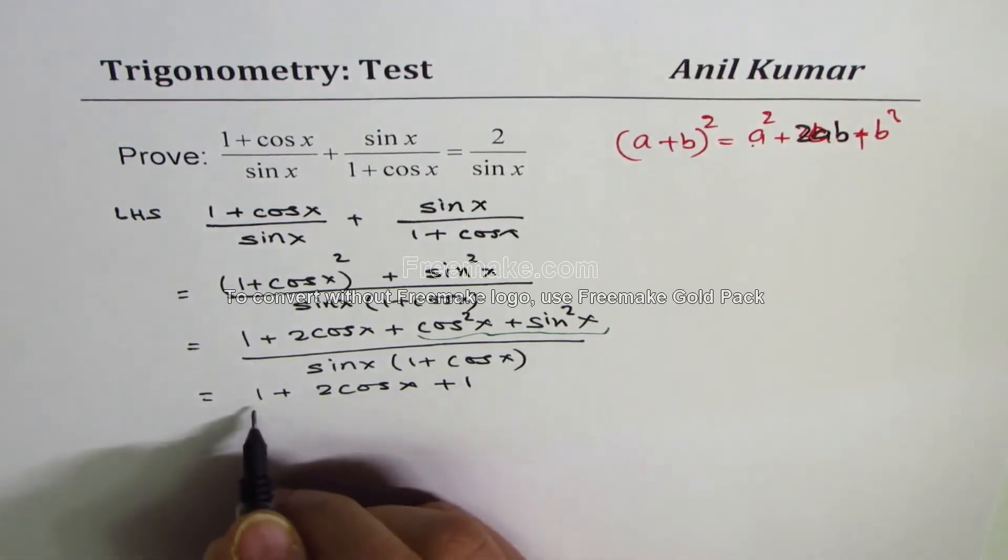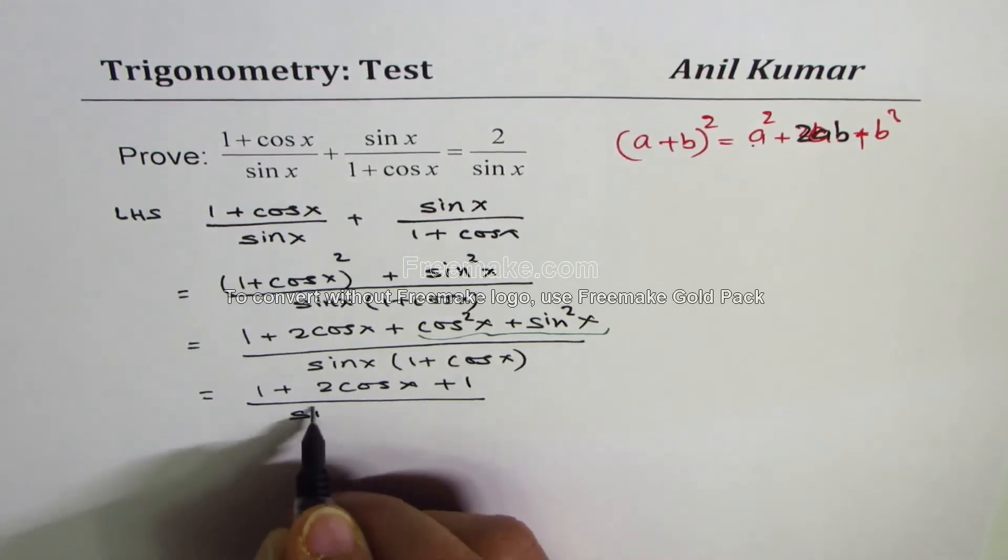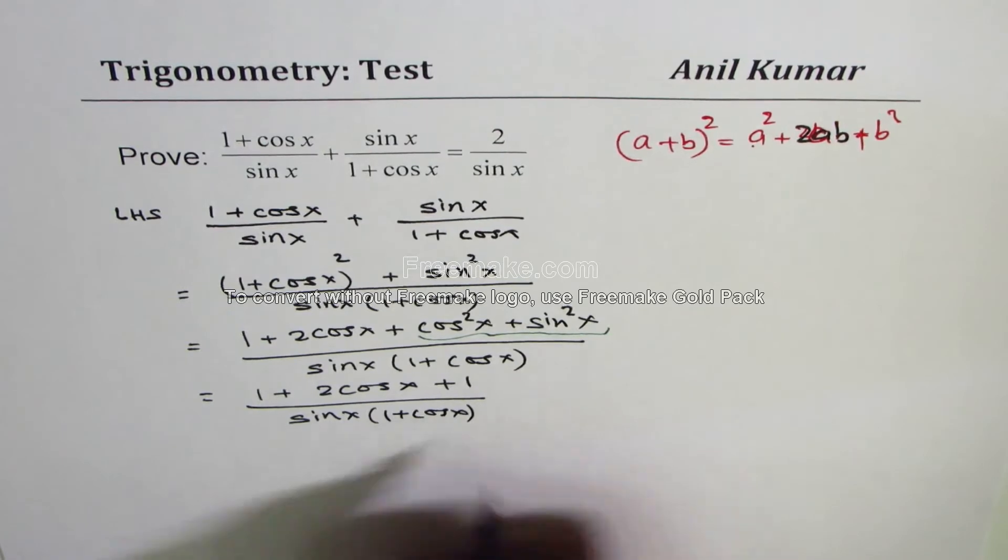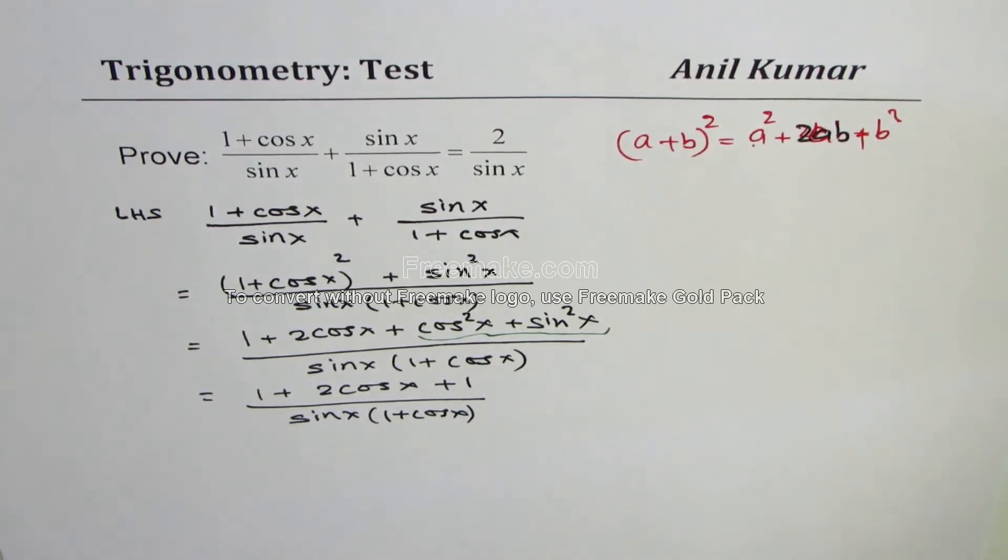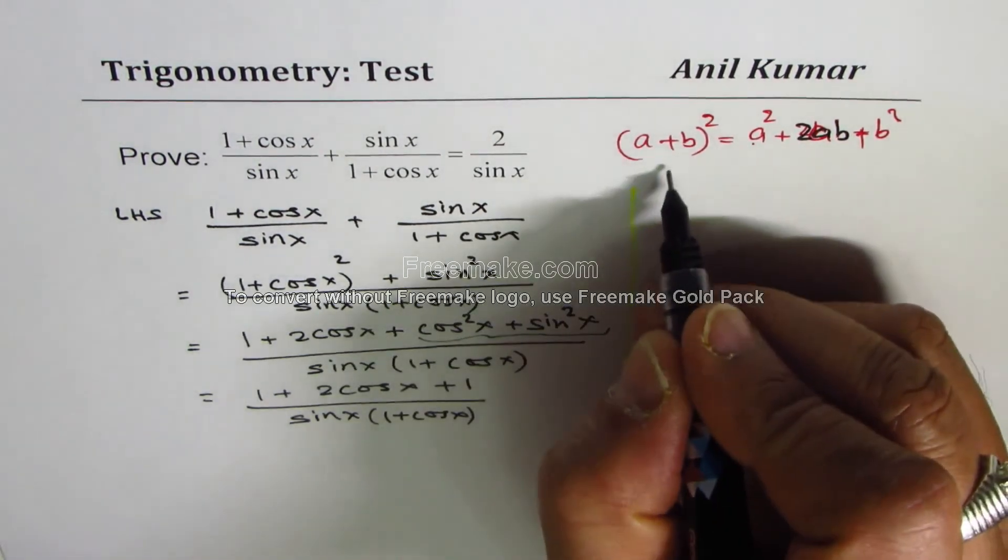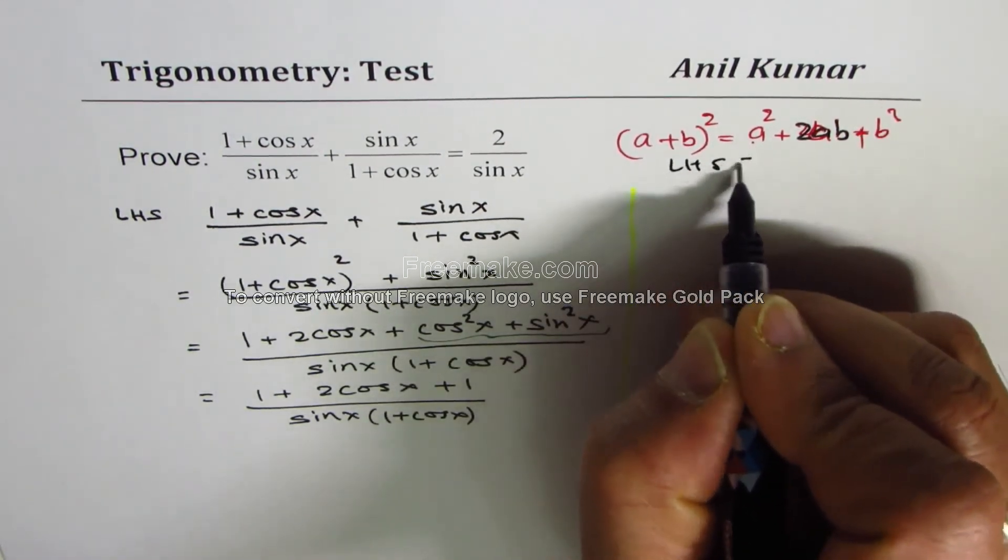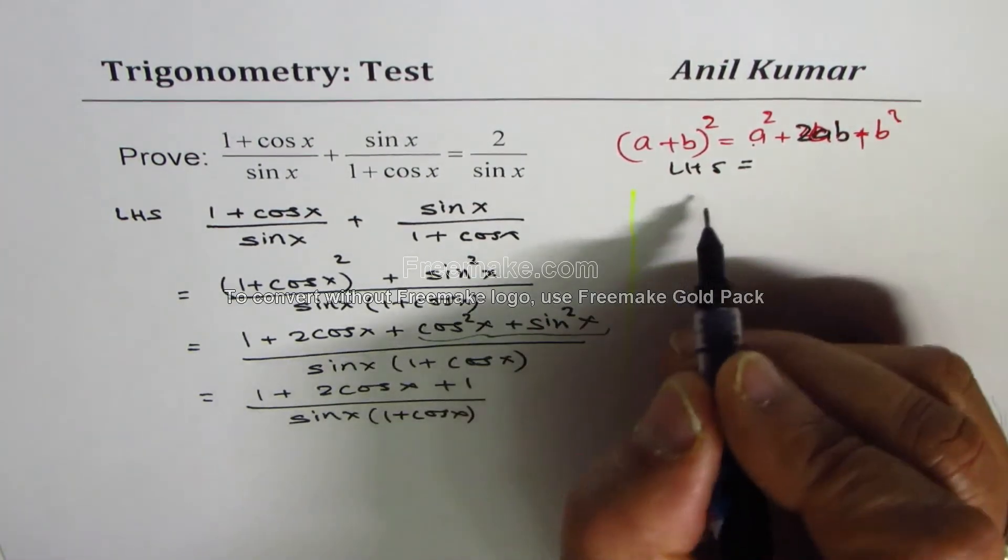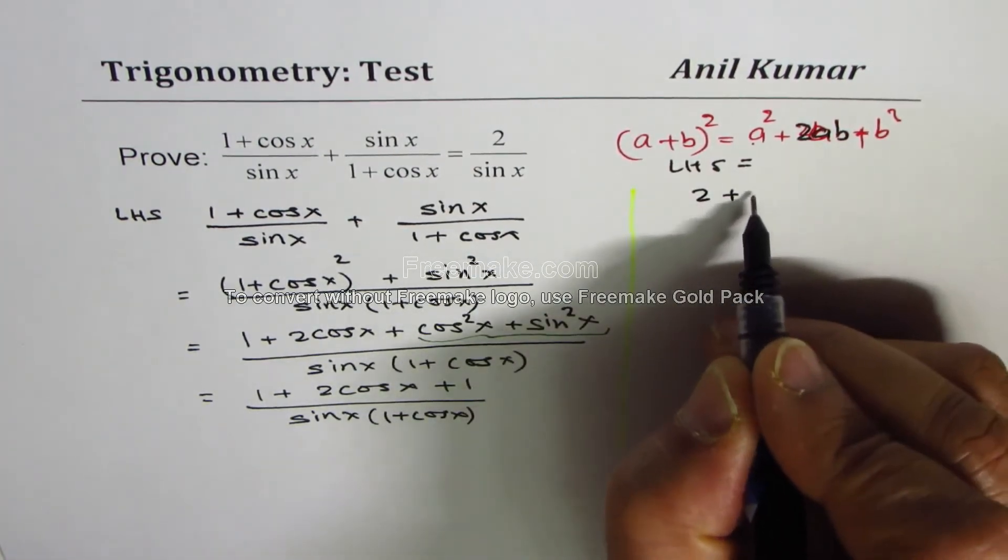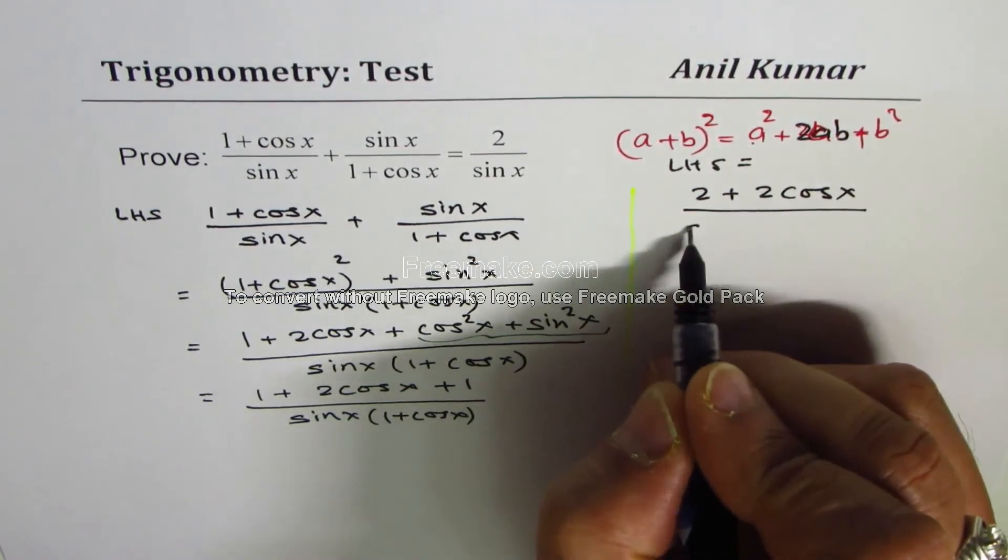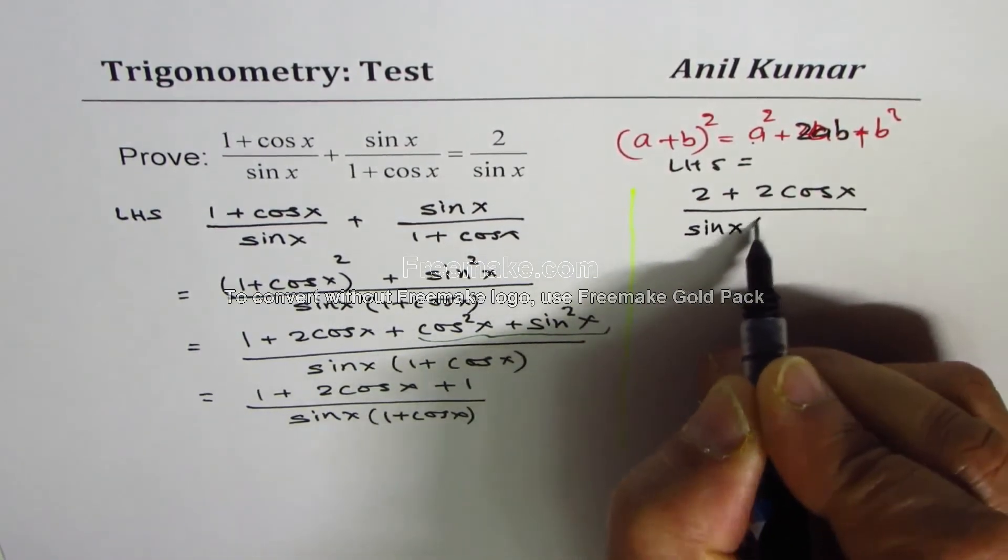So this is also equal to 1, so we could write this as 1 + 2 cos x plus 1, divided by sin x (1 + cos x). Let's take this to the right side and then we'll further simplify. What we are working is the left-hand side which is now equal to 1 + 1 + 2.